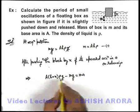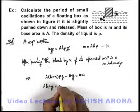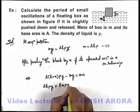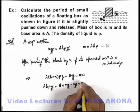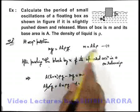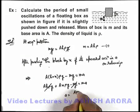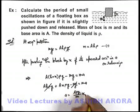And if we just open these terms it'll be Ahρg plus Axρg minus mg is equal to ma. Here Ahρg and mg gets cancelled out by equation 1. Here acceleration we are getting as Aρg upon m into x.